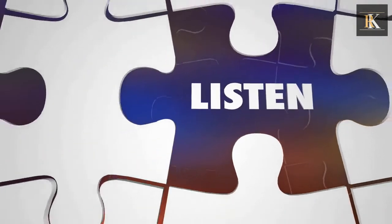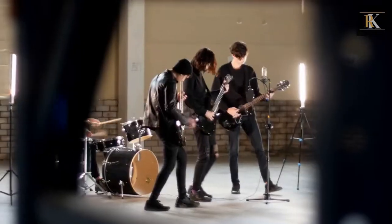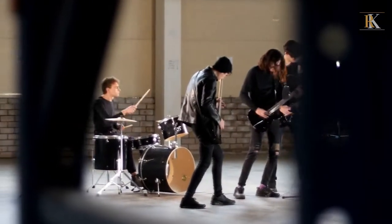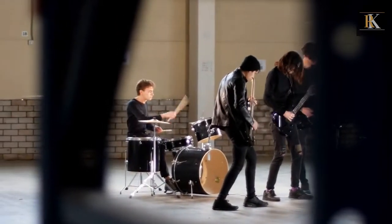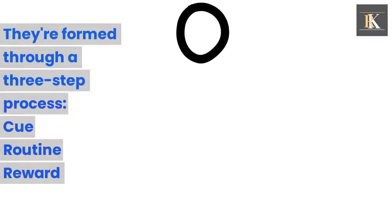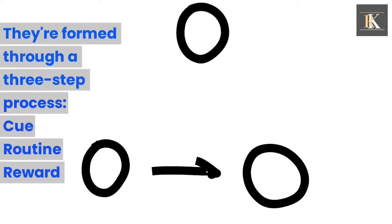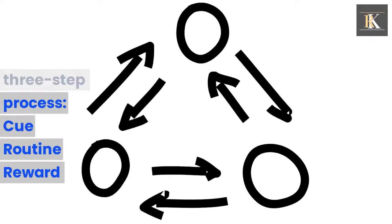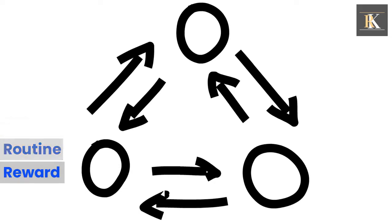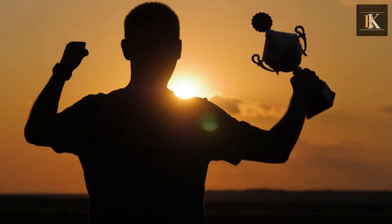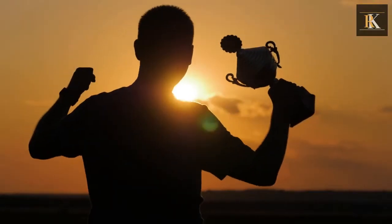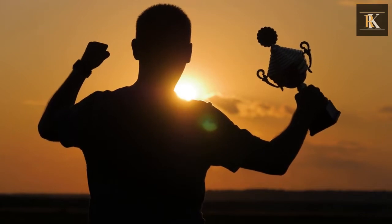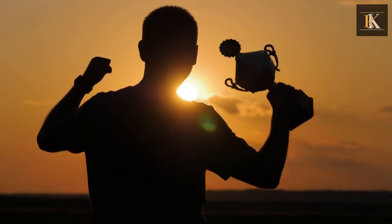Understanding the Neuroscience of Habits. Habits are patterns of behavior that are developed over time through repetition. They're formed through a three-step process: cue, routine, reward. The cue triggers the habit, the routine is the behavior itself, and the reward reinforces the habit.